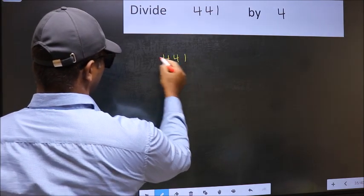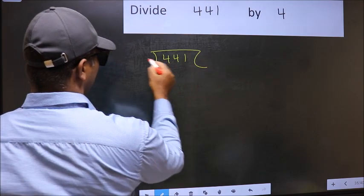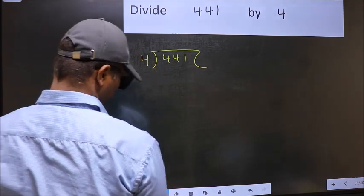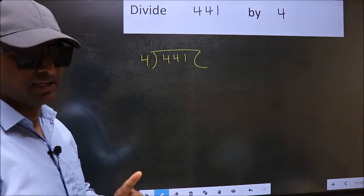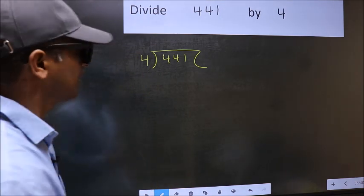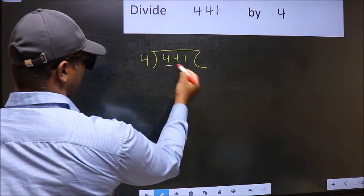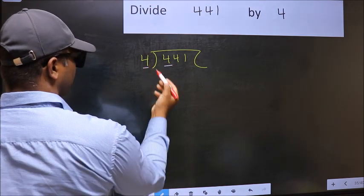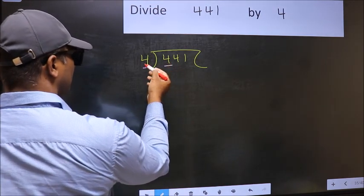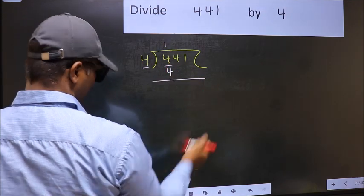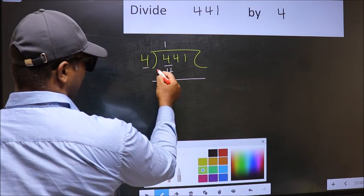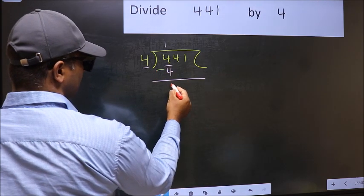441 and 4 here. This is your step 1. Next, here we have 4 and here 4. When do we get 4 in 4 table? 4 once, 4. Now, you should subtract. 4 minus 4, 0.